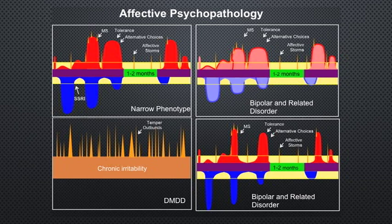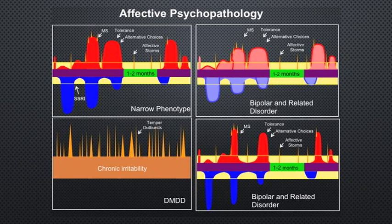Disruptive mood dysregulation disorder is nothing but chronic irritability with severe tantrums up to three or four times a week with severe temper outbursts. These patients don't have as much depression, and they don't have the full cluster of bipolar symptoms. But DMDD is also present in a lot of these bipolar patients as an underlying personality-like feature — DMDD as a flavor underlying, with a bipolar overlay on top. It's very common and very difficult to separate.